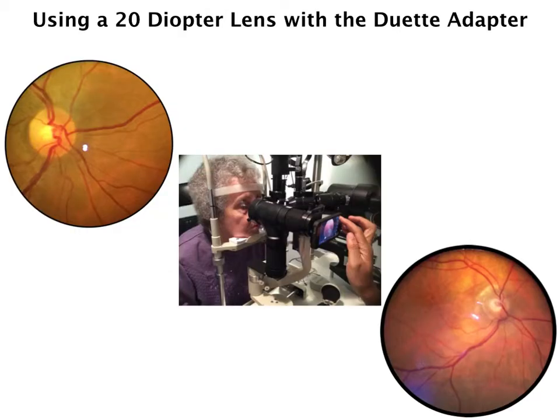As we discussed in the last lecture series, taking a fundus photograph using a handheld lens and a slit lamp is very, very difficult. Because of this, we've developed what we call the duet. This utilizes a 20 diopter lens from your clinic that you place into the front of the system and the iPhotoDoc adapter. As you can see from some of the initial images we've been able to capture, it takes very clear quality images.